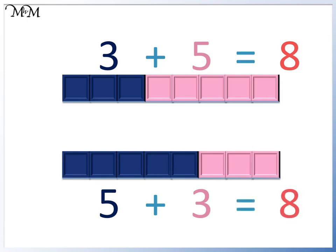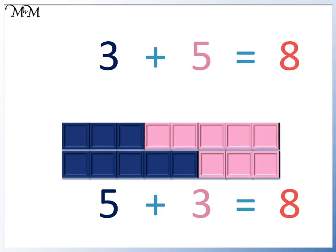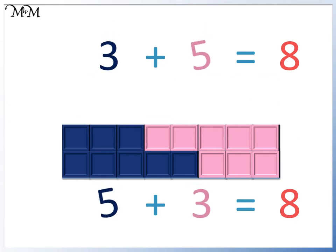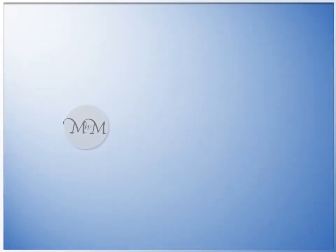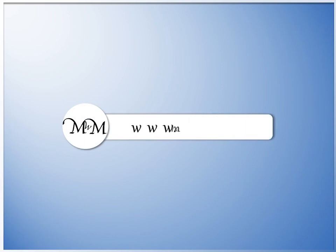Both sets of cubes are the same length, because the total answers are the same. Both sums are made up of 3 and 5, so both answers are 8. Thank you for watching. If you would like further practice, more questions are available on our website.